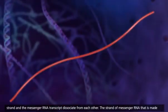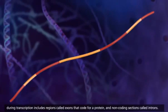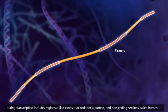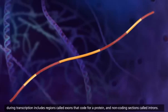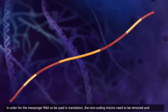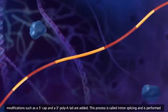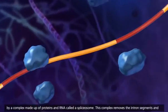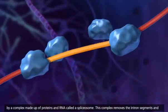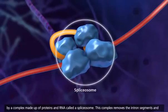The strand of messenger RNA that is made during transcription includes regions called exons that code for a protein, and non-coding sections called introns. In order for the messenger RNA to be used in translation, the non-coding introns need to be removed, and modifications such as a 5' cap and a 3' poly-A tail are added. This process is called intron splicing, and is performed by a complex made up of proteins and RNA called a spliceosome.